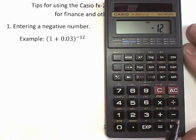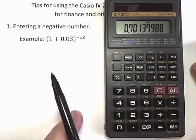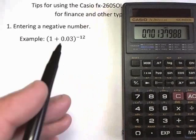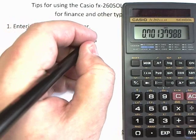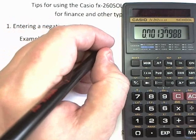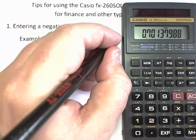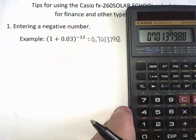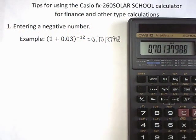So now you have your negative exponent. You've already put the power, done the power button and put the negative in, so all you have to do now is to hit equal. And so you have your answer. Zero point seven oh one three seven nine eight eight. Now I'm going to say this here just because I say it every time I work with these problems. In the finance problems we're working with,